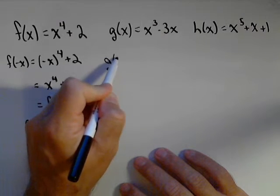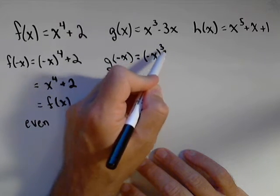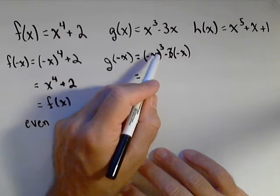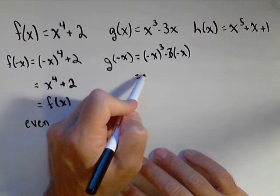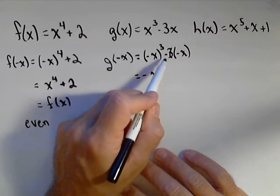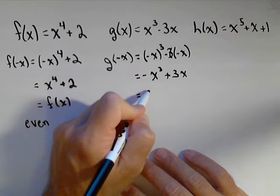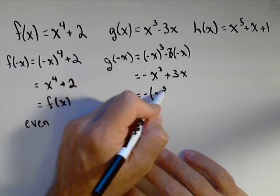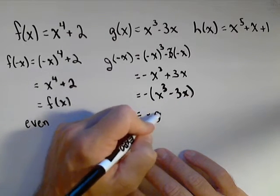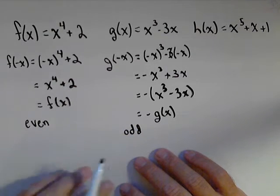For odd, we start the same way. We calculate g of negative x by putting negative x's in for x. We get negative x cubed minus 3 times negative x. Negative x cubed is negative x times negative x times negative x. With the odd exponent, it keeps the negative sign, so we get negative x cubed. Minus 3 times minus x gives us plus 3x. If I factor a negative out, I get negative times (x cubed minus 3x), which equals negative g of x. When g of negative x equals negative g of x, we have an odd function.